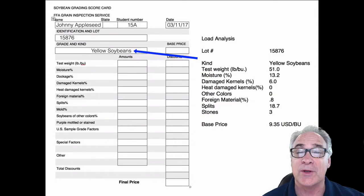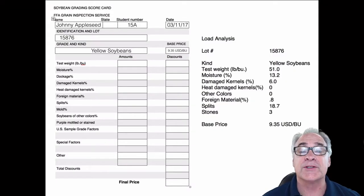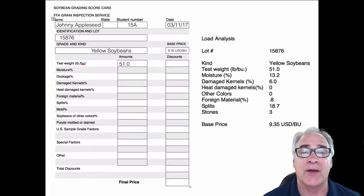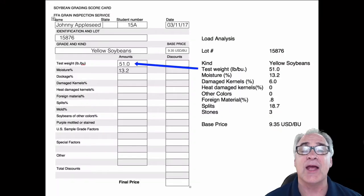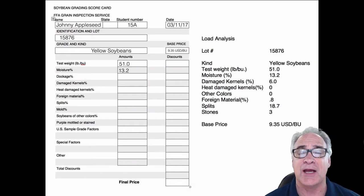The other thing is the kind of grain that you're going to be seeing, in this case it's going to be yellow soybeans, and then of course the base price. The base price or market price isn't always on the load analysis, so please ask the room monitor or whoever's giving the test what is that number. And then go ahead and start moving across. Normally it's the test weight, the test weight is the amount of pounds each bushel weighs.